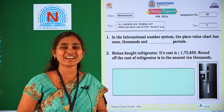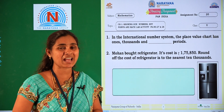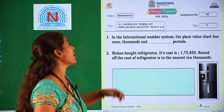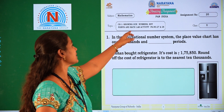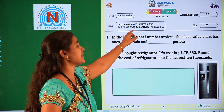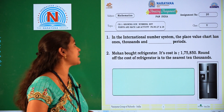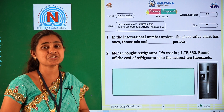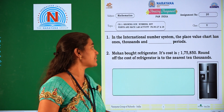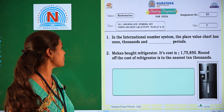Hi children, welcome to our Narayana virtual teaching. Today's amazing assignment is related to knowing our numbers — key points and the math lab activity. It belongs to our first chapter, page numbers 27 and 28. You can refer. Go for the first question.